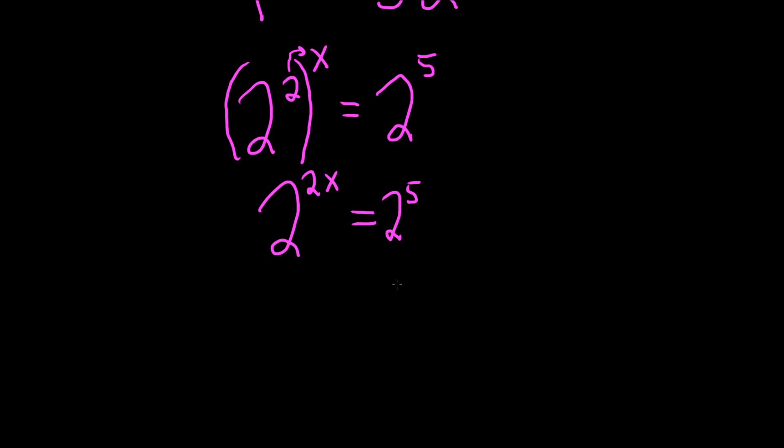And now that we have 2s on both sides we can drop the 2s. So we get 2x equals 5.